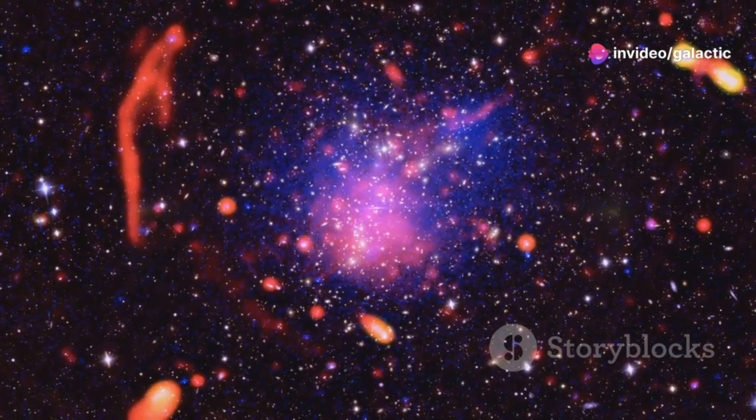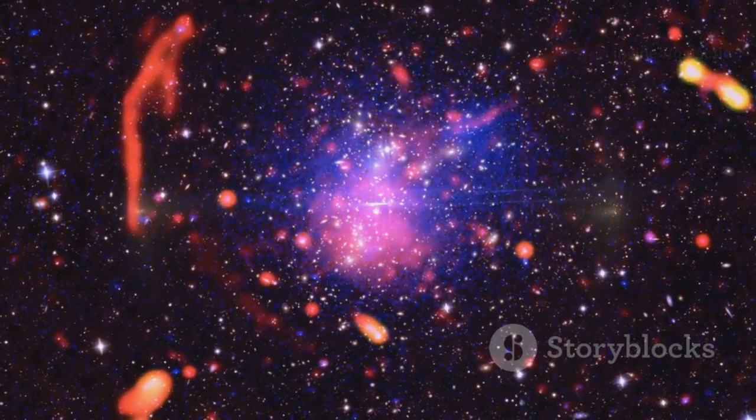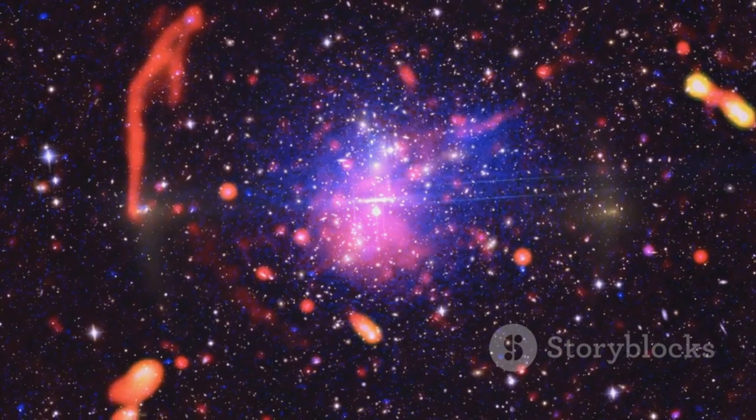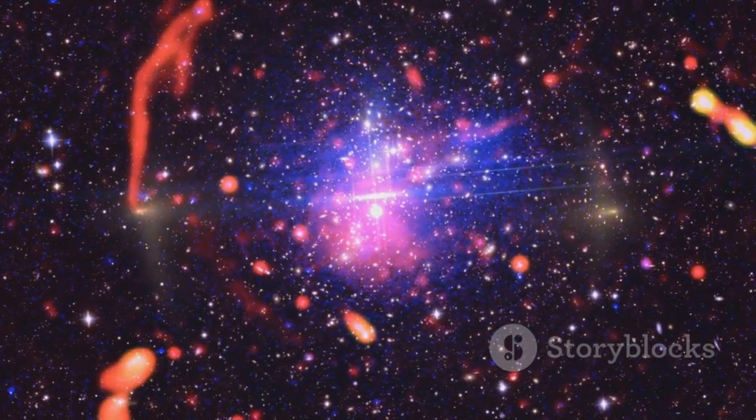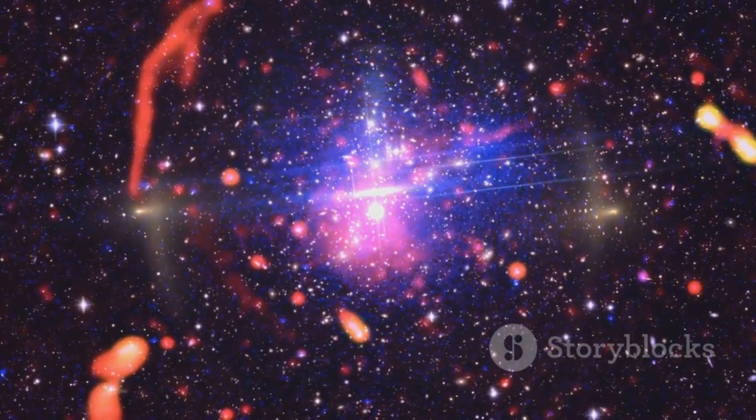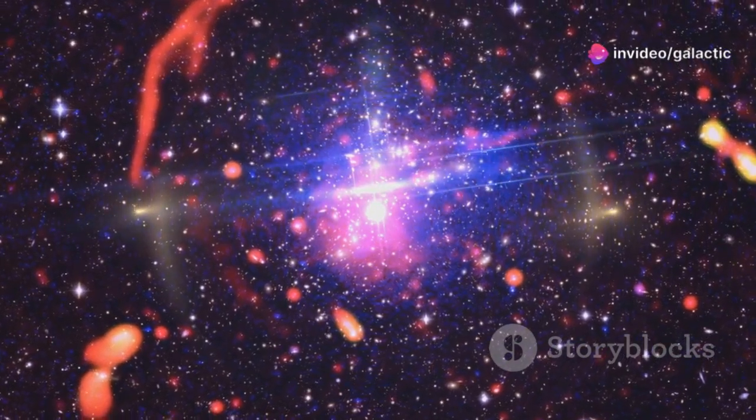Once in space, JWST unfolded like a piece of intricate origami, its massive sunshield and mirrors deploying with precision. This complex process was a testament to human ingenuity and the drive to explore the unknown.